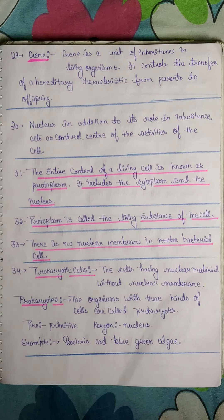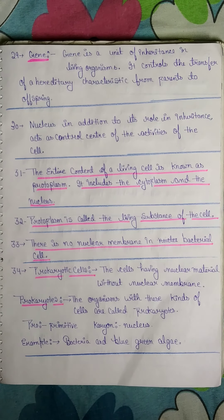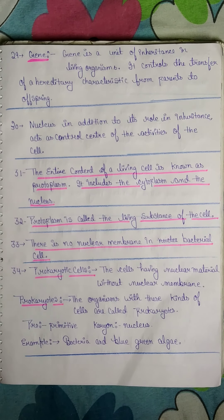Gene controls the transfer of a hereditary characteristic from parents to the offspring. Point 30: Nucleus — in addition to its role in inheritance, the nucleus acts as the control center of the activities of the cell.